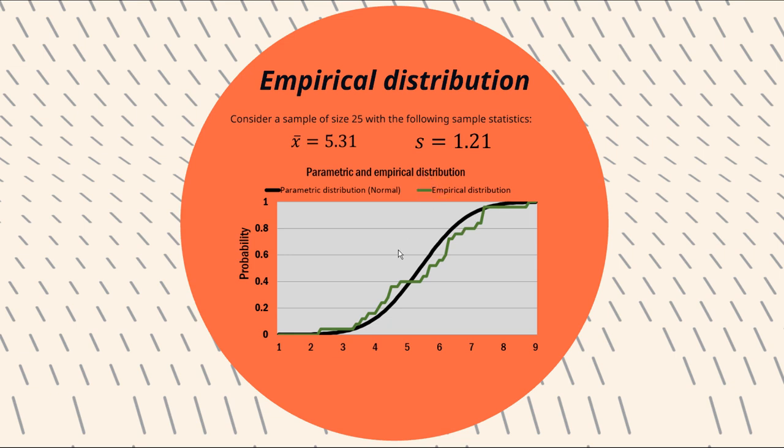So each of these notches takes us up, well, exactly 1 25th, right, because there are 25 observations. And yes, technically there shouldn't be diagonal lines here. There should be nice straight lines in each of these sort of notches upwards. It's just a feature of me doing this in Excel. Nonetheless, you can see that it is quite discrete.